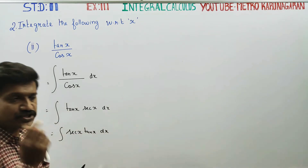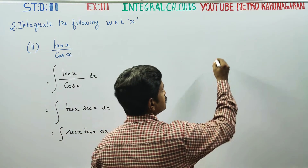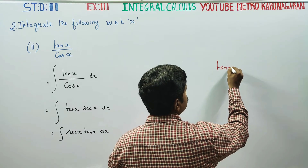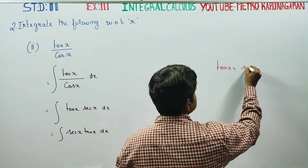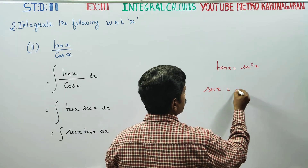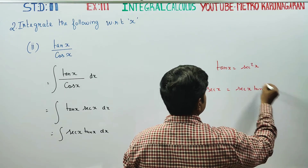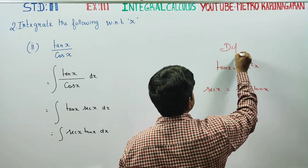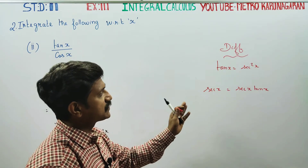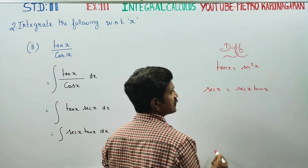Integration and differentiation are opposite processes. Let's recall from the differentiation chapter — when you differentiate tan(x), you get secant squared x. When you differentiate secant x, you get secant x tan x. So remember from the last chapter: tan x differentiated gives secant squared x, and secant x differentiated gives secant x tan x.